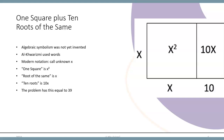In modern notation, we would call the unknown x. Then the square is denoted by the quantity x squared. The root of the square would also be x, and ten roots would be represented by 10x. The area shown in the diagram equals 39 units.